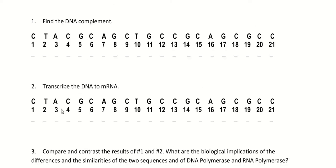Now transcribe — transcribe to mRNA. This is making a DNA complement, except with DNA you use T's and with RNA you use U's. So anywhere up here where you would have put a T, you're going to put a U down here. So here this is a C, so that's a G — same as before. Here it's a T, so you put an A. But here where you have an A, up in the DNA complement you put T, but here in the RNA you put a U. So anywhere you would normally put a T, you just put a U. Pretty easy.